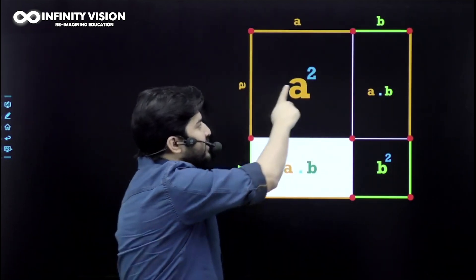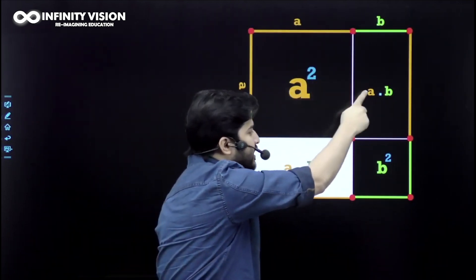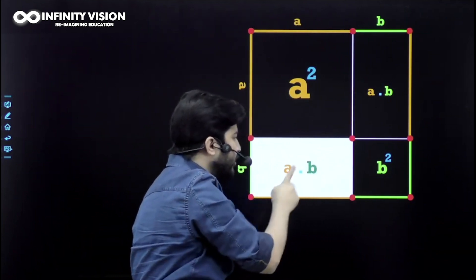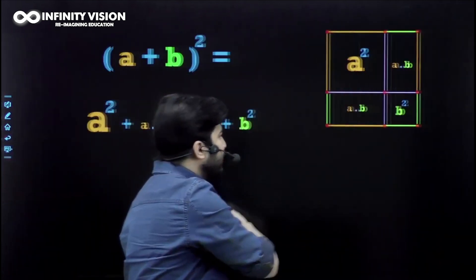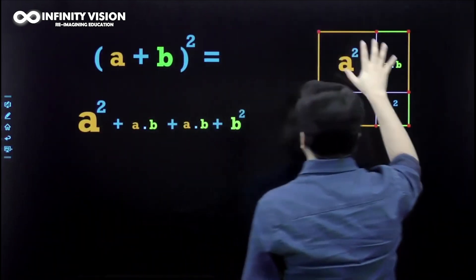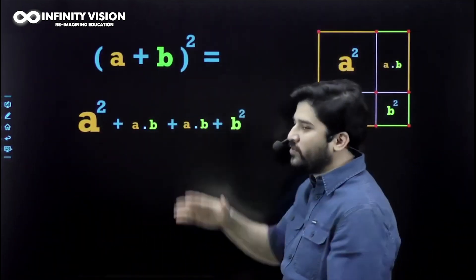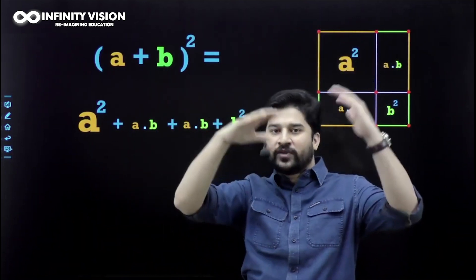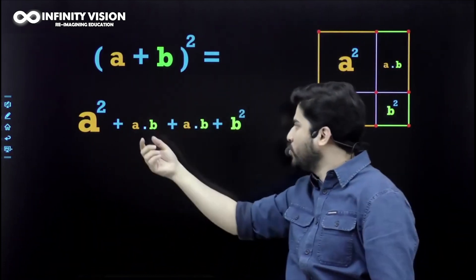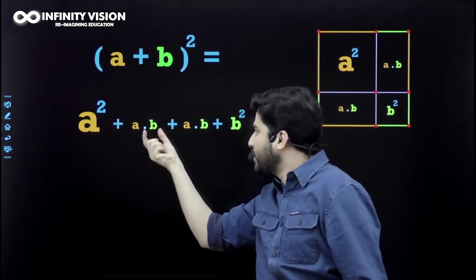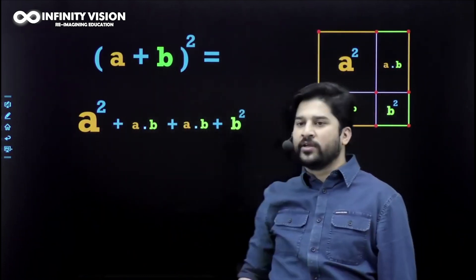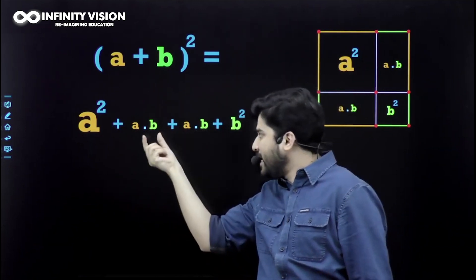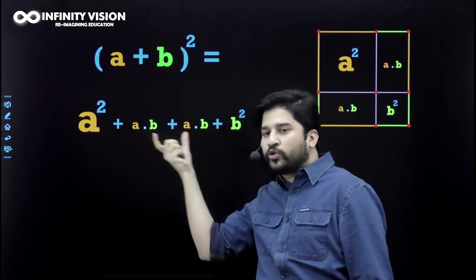You see: this is a², this is ab, this is b², and this is ab. So a plus b whole square — the area of the full square — equals a² plus ab plus ab plus b².